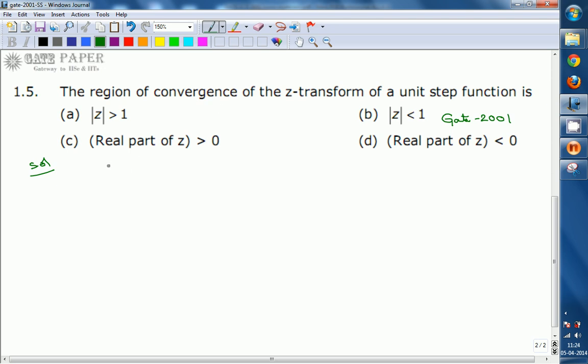Let us consider X(N) equals U(N). Now find the Z-transform of X(Z), that is Z-transform of X(N), which equals Z-transform of U(N). That equals summation N equals minus infinity to infinity U(N) into Z power minus N. We know that U(N) equals 1 for N greater than or equals to 0.